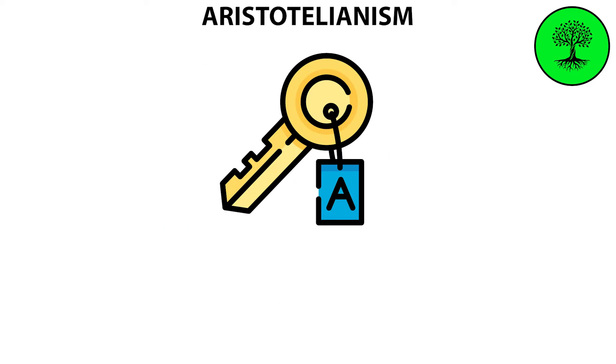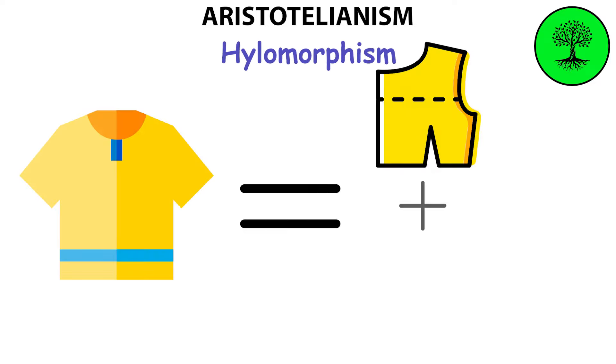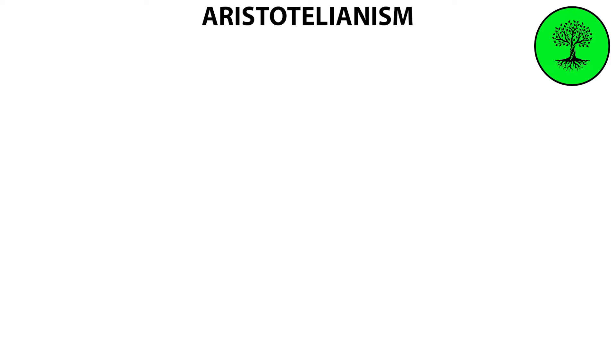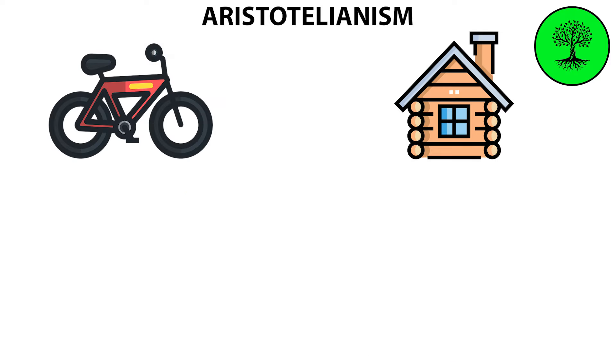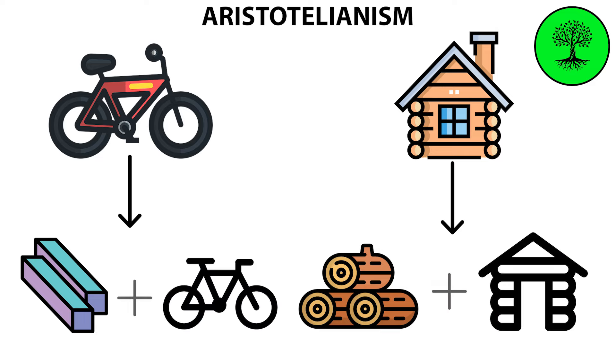One of the key concepts in Aristotelianism is the idea of hylomorphism. This is the theory that a particular substance is a combination of both matter and form. In simpler terms, everything in the world is made up of matter, the stuff things are made of, and form, the arrangement or design of that matter.